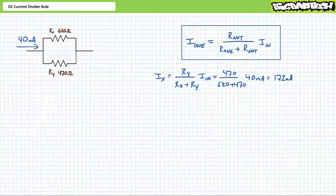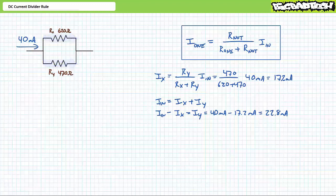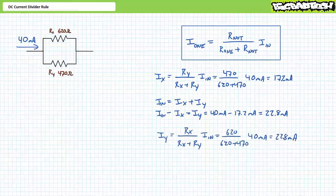We could use another application of the DC Current Divider Rule to solve for IY; however, I suggest a far more efficient means of doing so — namely, Kirchhoff's current law. Given 40 milliamps of current enters the parallel relationship and 17.2 milliamps is routed through RX, an algebraic rearrangement of Kirchhoff's current law suggests IY equals IN minus IX. Substituting our given values yields IY to be the remaining 22.8 milliamps. As a means of confirming our work, another application of the current divider rule similarly demonstrates 22.8 milliamps travels through RY.